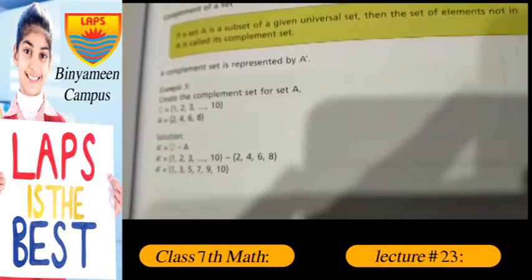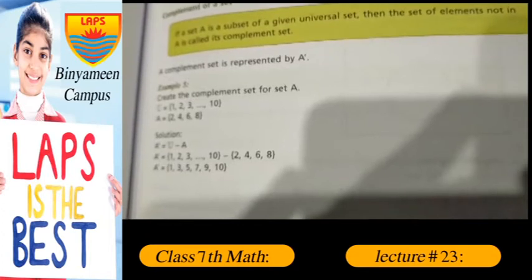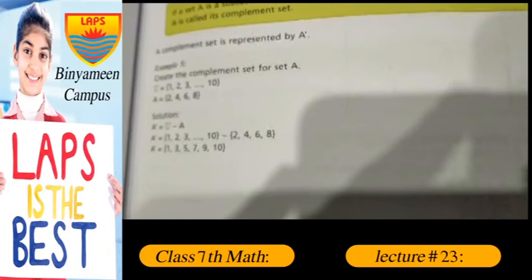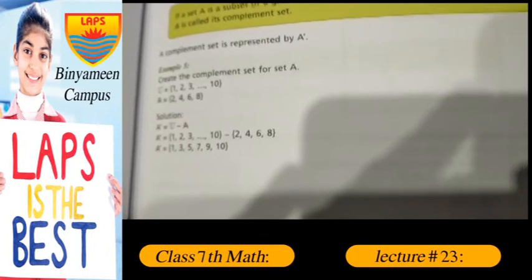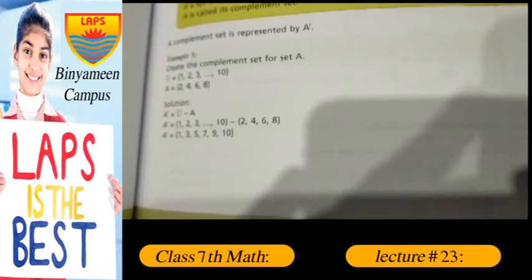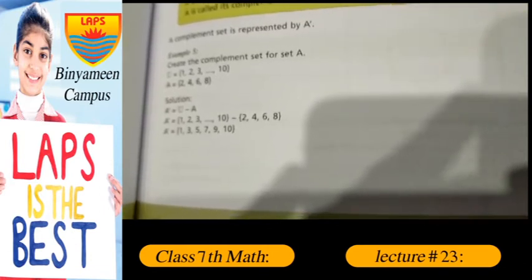For example, create the complement of set for a set A. U, a set 1, 2, 3, 4, 5, 6, 7, and 10, and A, a set of 2, 4, 6, 8. So find the difference between U and A. A complement is equal to U difference minus A.